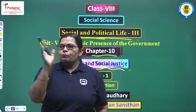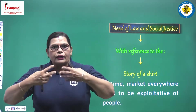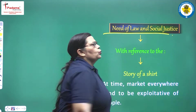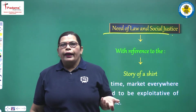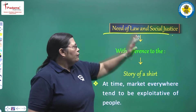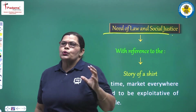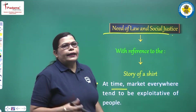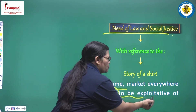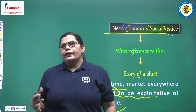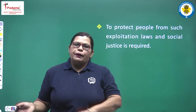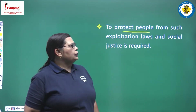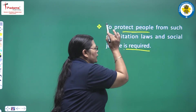In Part 1st, one thing is important when considering the main aim of this chapter: the need for law and social justice — for whom and why. Many reasons are behind this. At times, markets everywhere tend to be exploitative of people. Many ways of exploitation of people may exist in any circumstances. To protect people from such exploitation, laws and social justice are required.